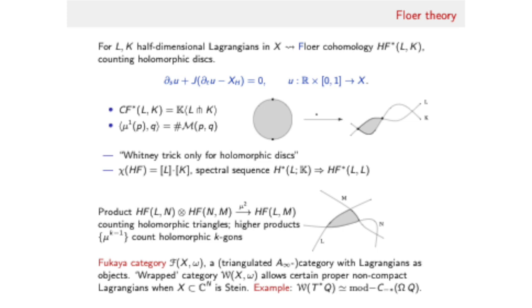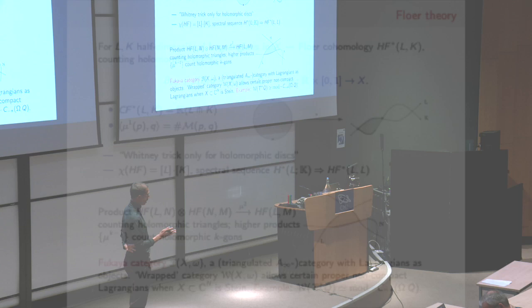There's an important example, a motivating example: the cotangent bundle of a manifold, which is such a non-compact symplectic manifold in which this wrapped category recovers a classical but rather sophisticated topology invariant, which is modules over chains on the base loop space. This is the background setting for symplectic topology and holomorphic curve theory.